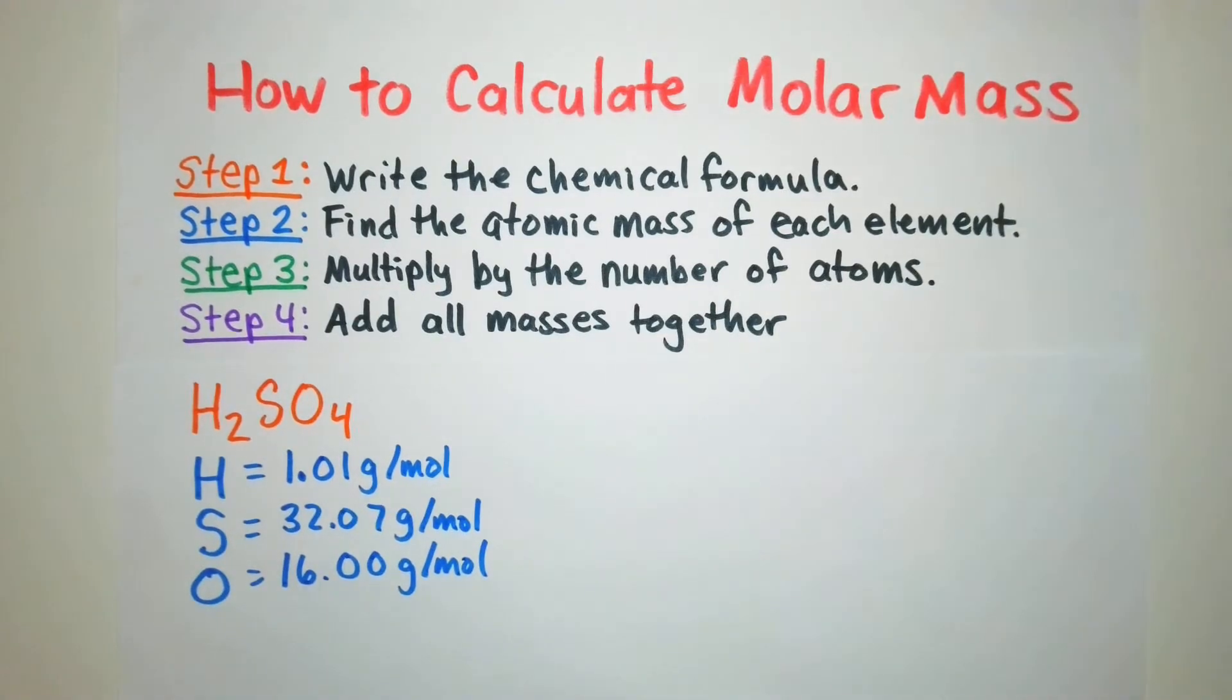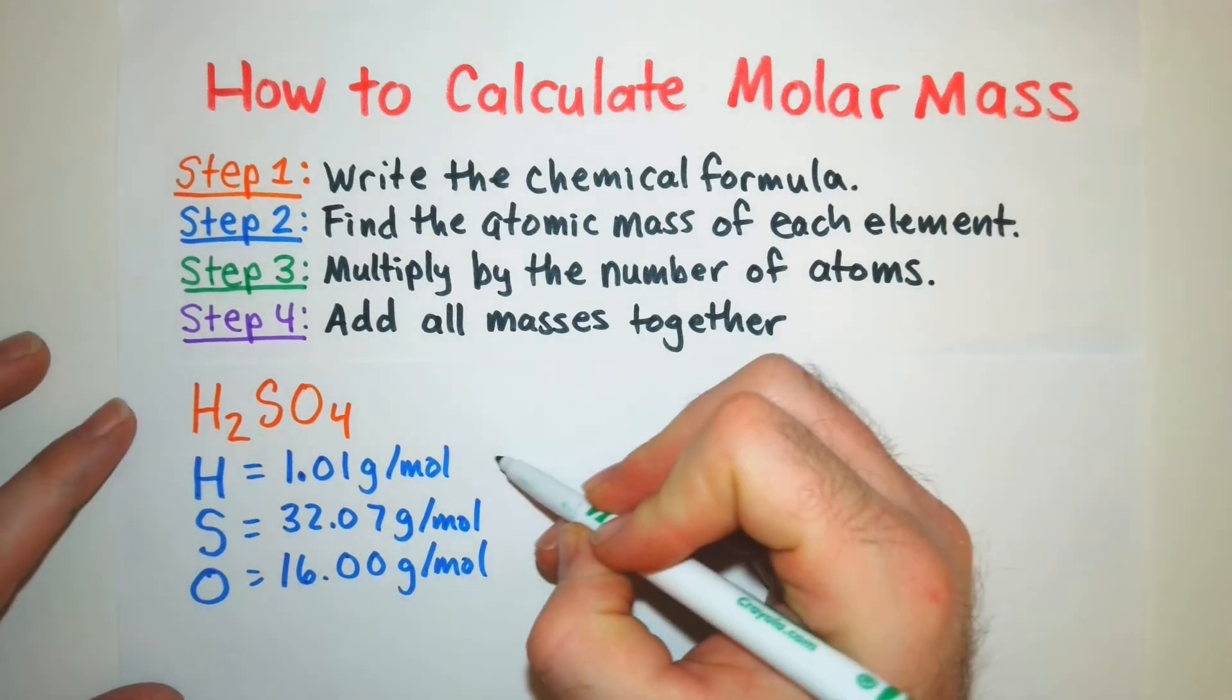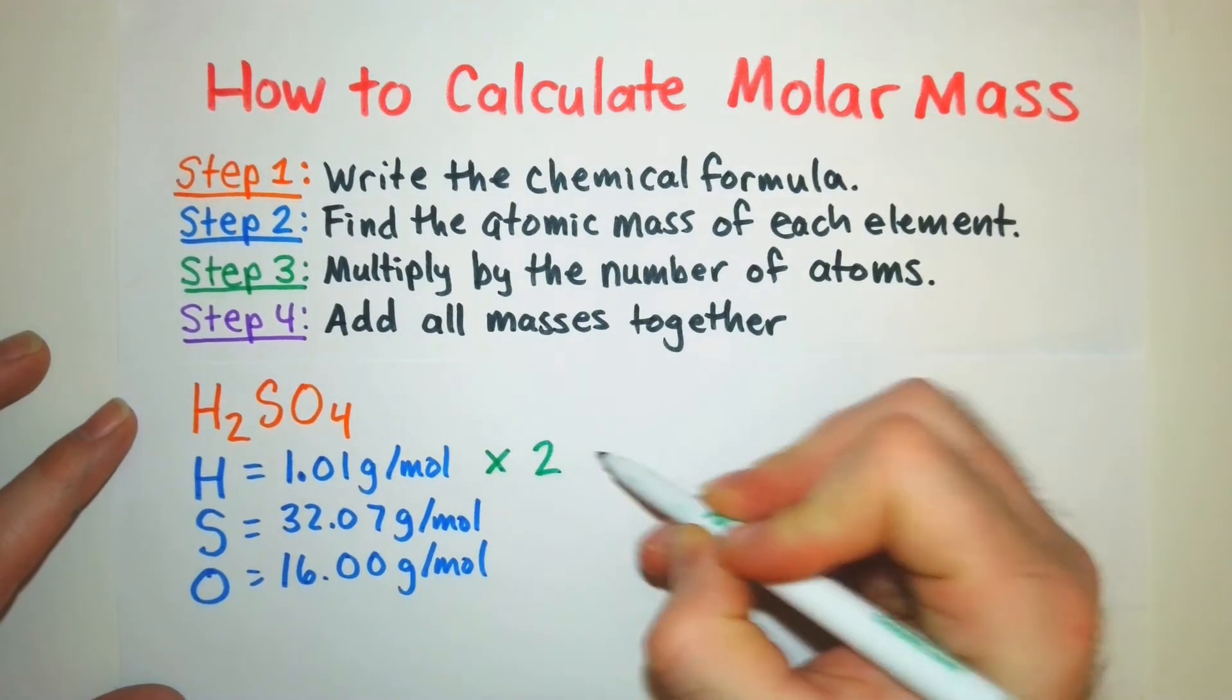Now that we have that we're going to determine how many of each of those elements are in that formula and we're going to multiply times that number. For hydrogen we can see we have a subscript of two which means we have two of those hydrogens in that chemical formula. So I'm going to multiply that number by two.